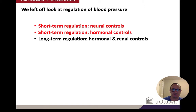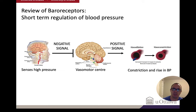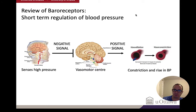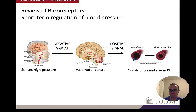Last time we left off looking at short-term regulation by neuronal controls and hormonal controls, so we'll just touch on that briefly. Short-term regulation by neuronal controls: one great example is the baroreceptors in your carotid artery. These sense pressure during high blood pressure and signal to the vasomotor center. The vasomotor center is usually telling your blood vessels to constrict, but when these receptors are active, that action is inhibited, driving things back towards vasodilation.